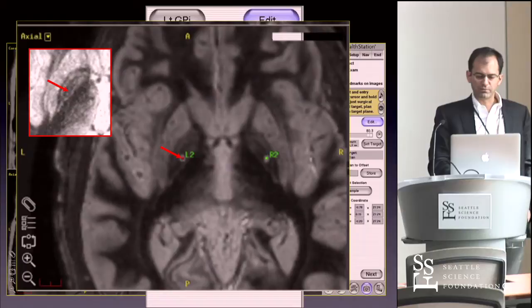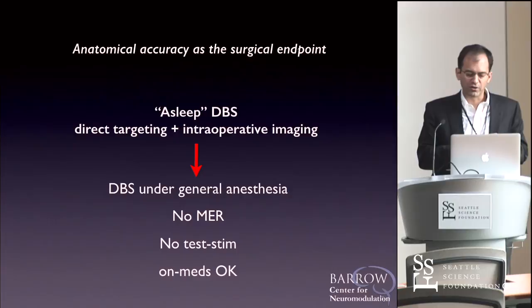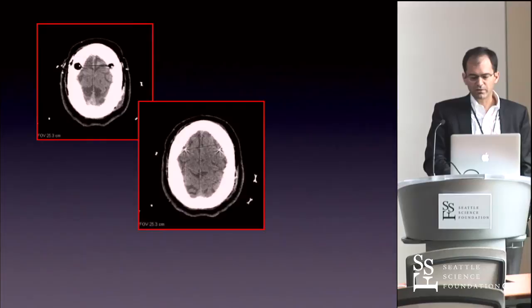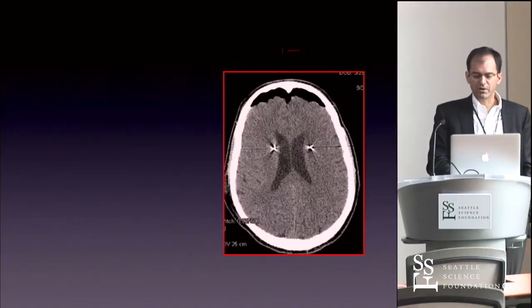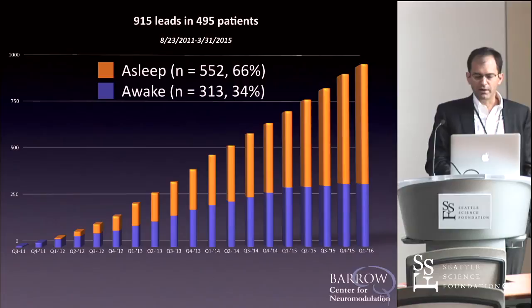Combining direct targeting and intraoperative imaging is what allows us to do this without recordings, under general anesthesia, without using test stimulation as a crutch to verify the tremor stops. Because basically if we hit the right target, the tremor stops. A lot of people talk about brain shift, but our median pneumocephalus is zero. There are technical modifications you can make to really reduce the amount of CSF you lose.